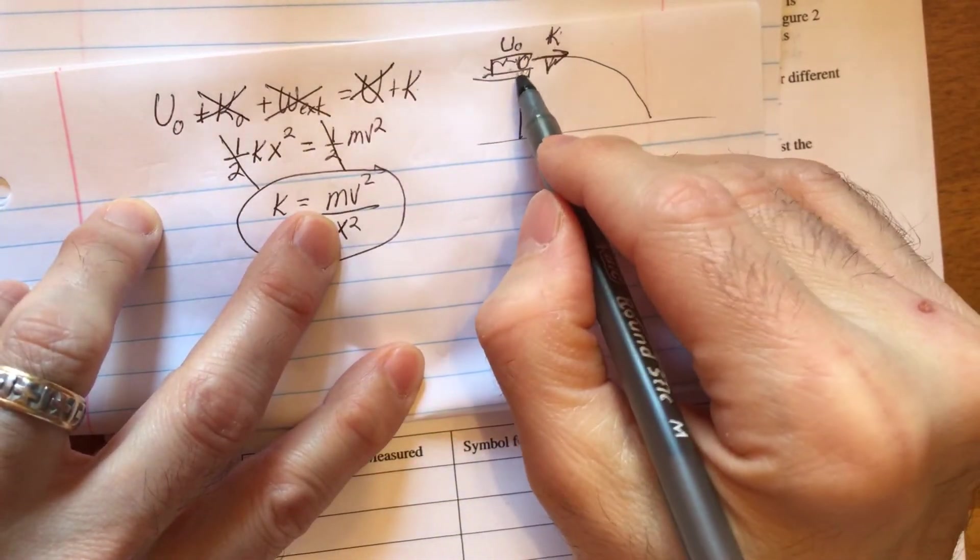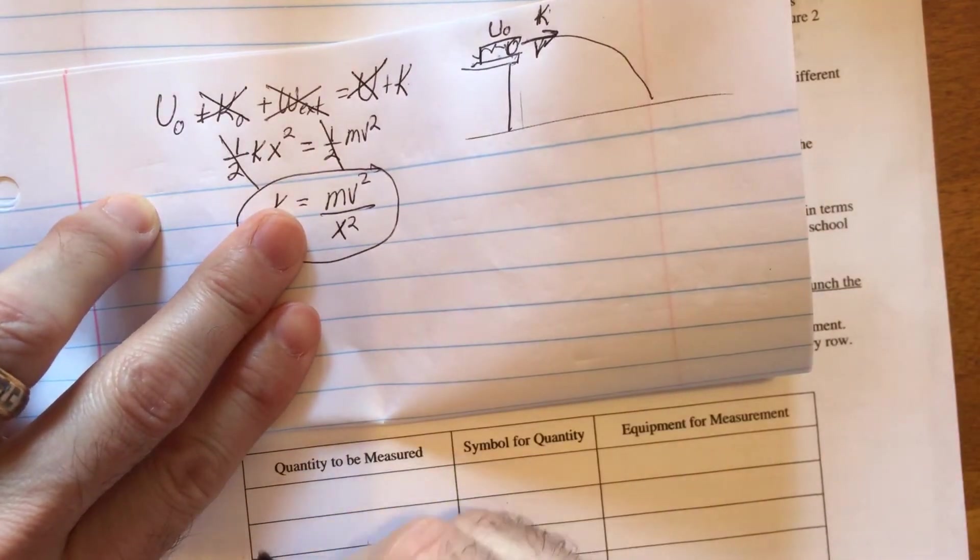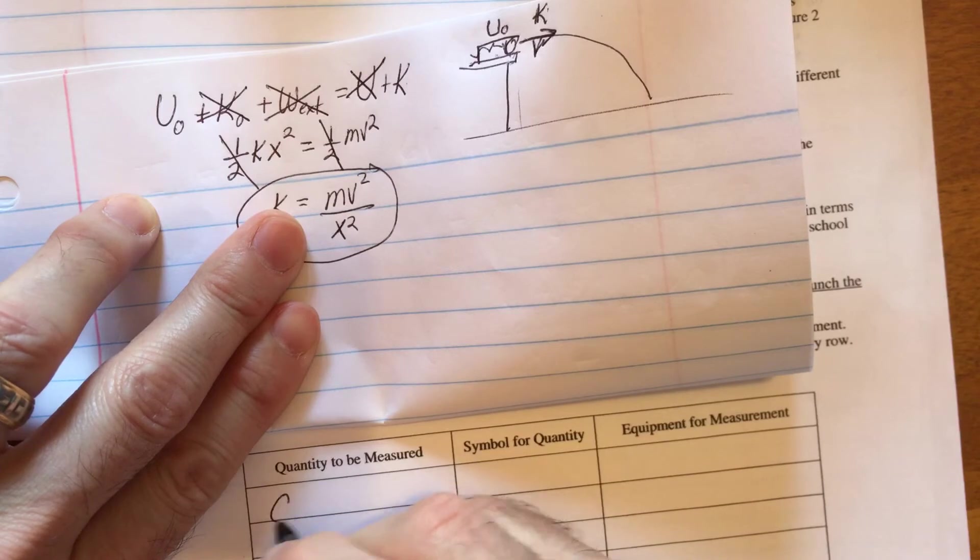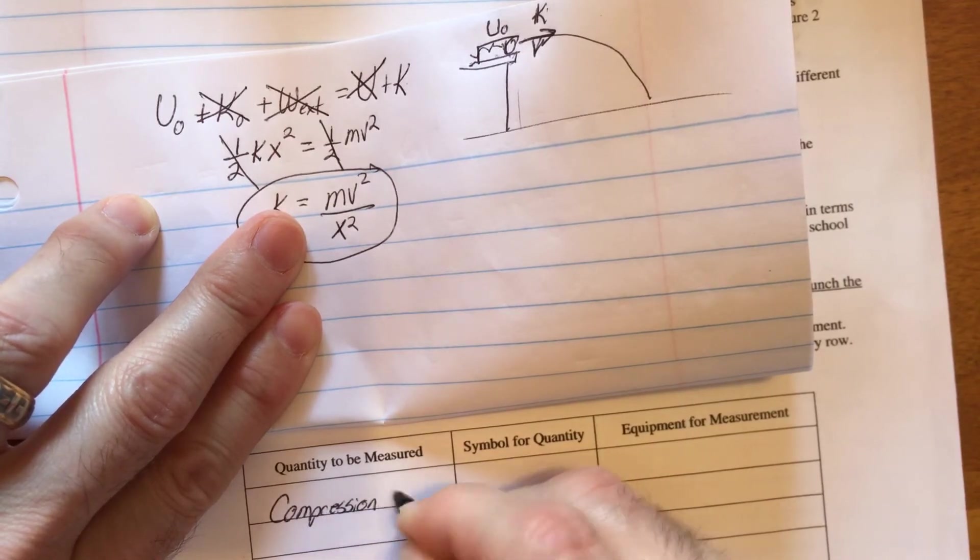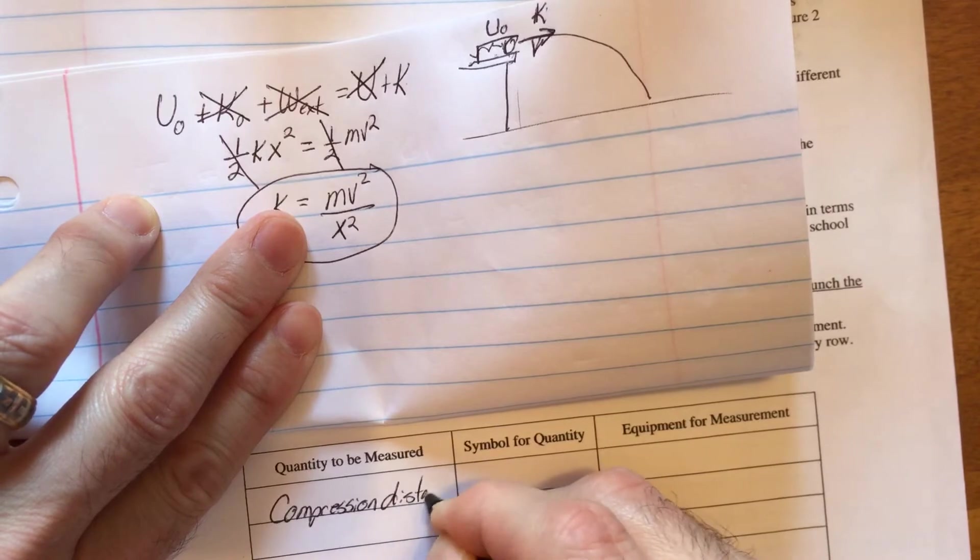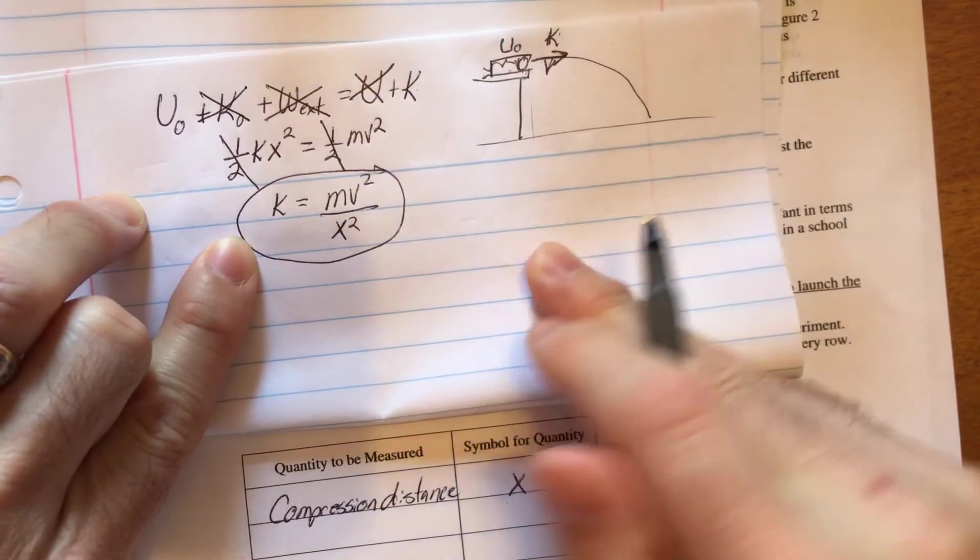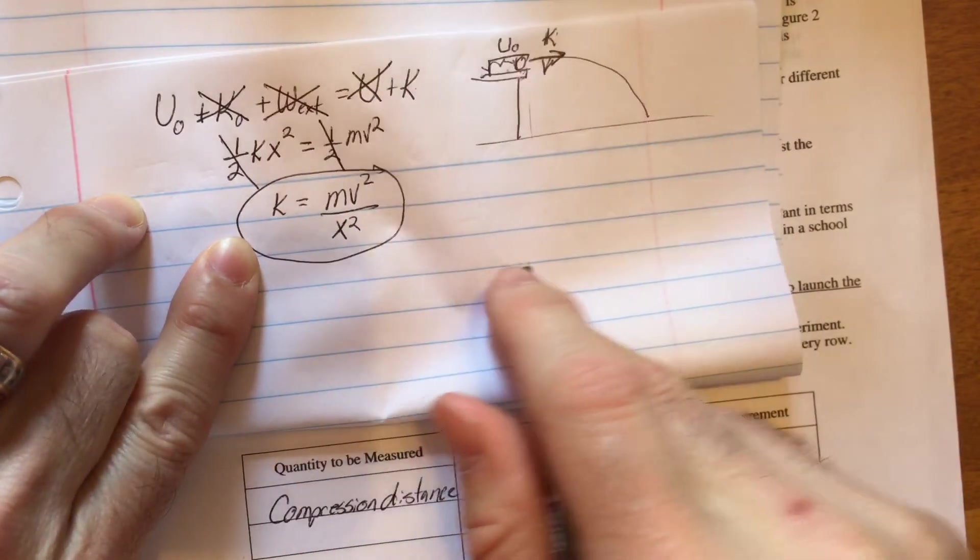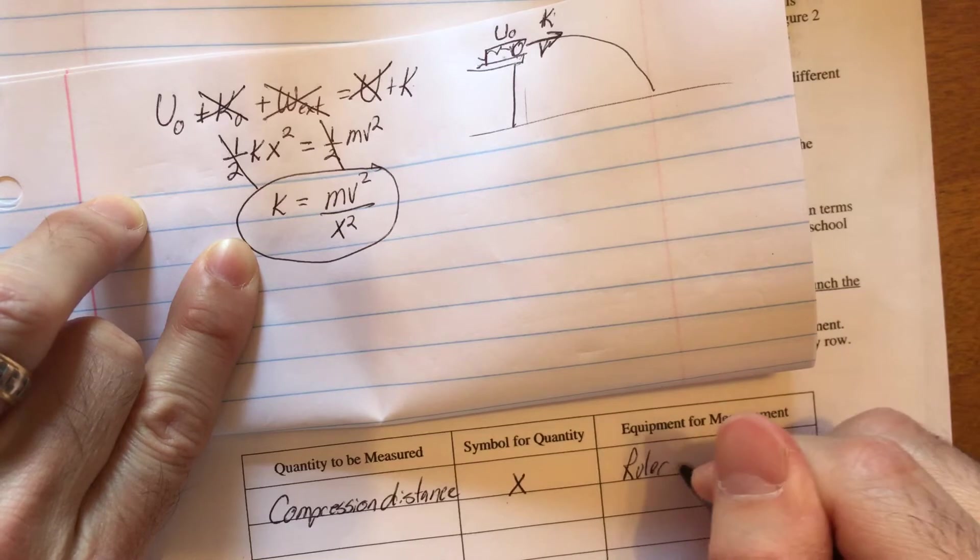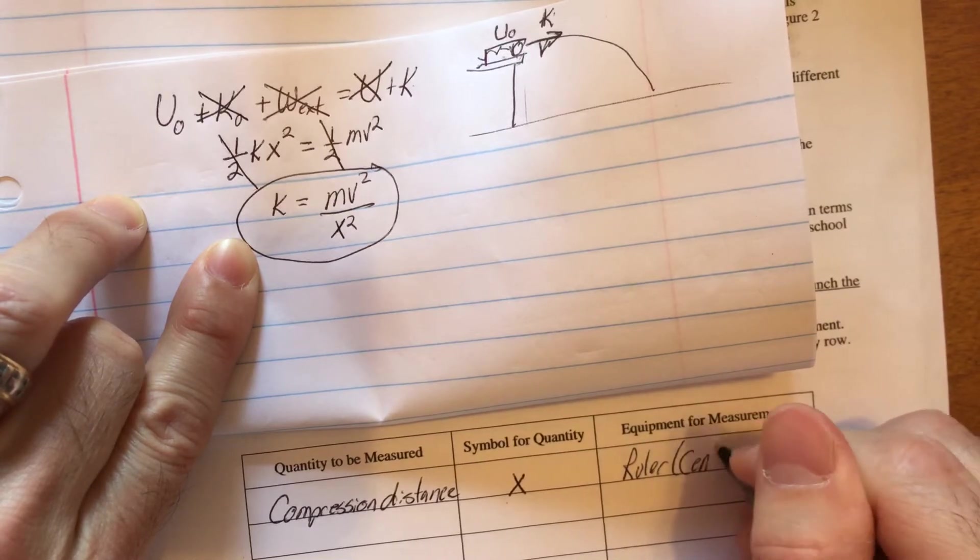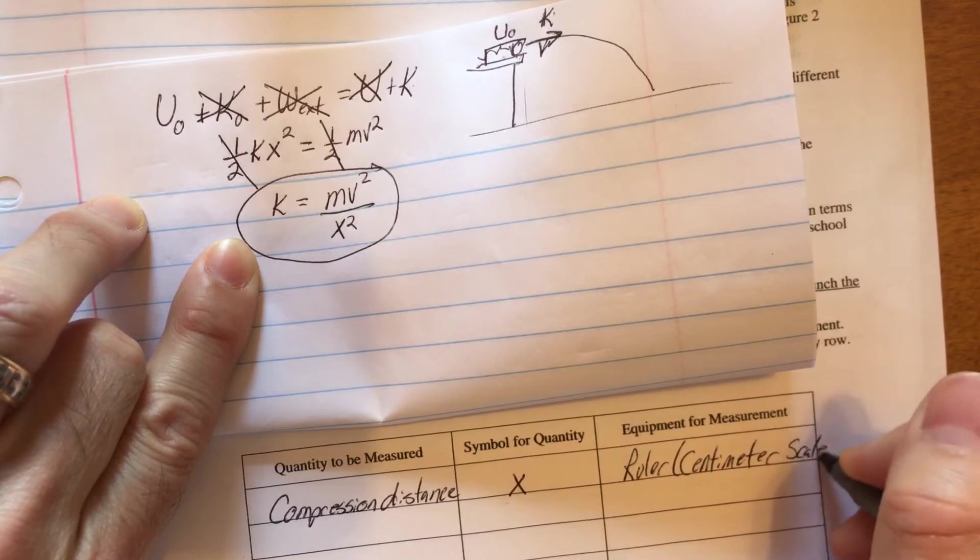Well, I could measure how far back I've compressed the spring. And so that's going to be compression distance. And I've called that x already. And the equipment I would use to measure that, well, that would just be a little ruler. Maybe a centimeter scale.